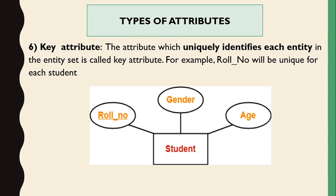The next type is key attributes. Key attributes are those attributes that uniquely identify each entity in the entity set. For example, roll number is unique for each student, so roll number is the key attribute. Key attributes are represented by an underline — the attribute name is shown with an underline to indicate it is a key attribute.